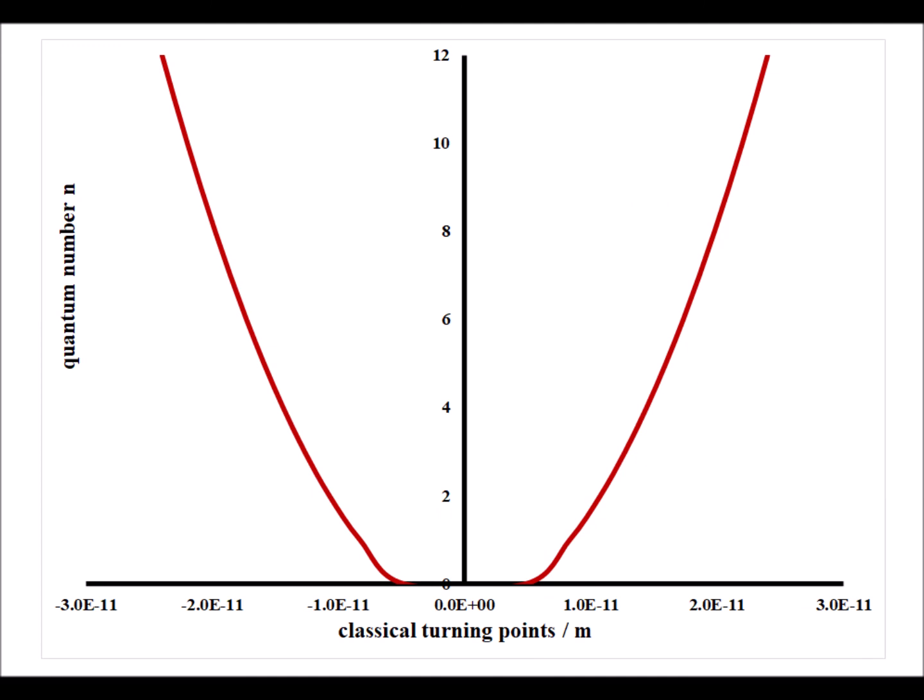And here we repeat again one more time. The classical turning points plotted as a function of the quantum number n, and we notice this parabolic shape for the classical case, and we notice how the quantum harmonic oscillator approaches this value as n gets sufficiently large.